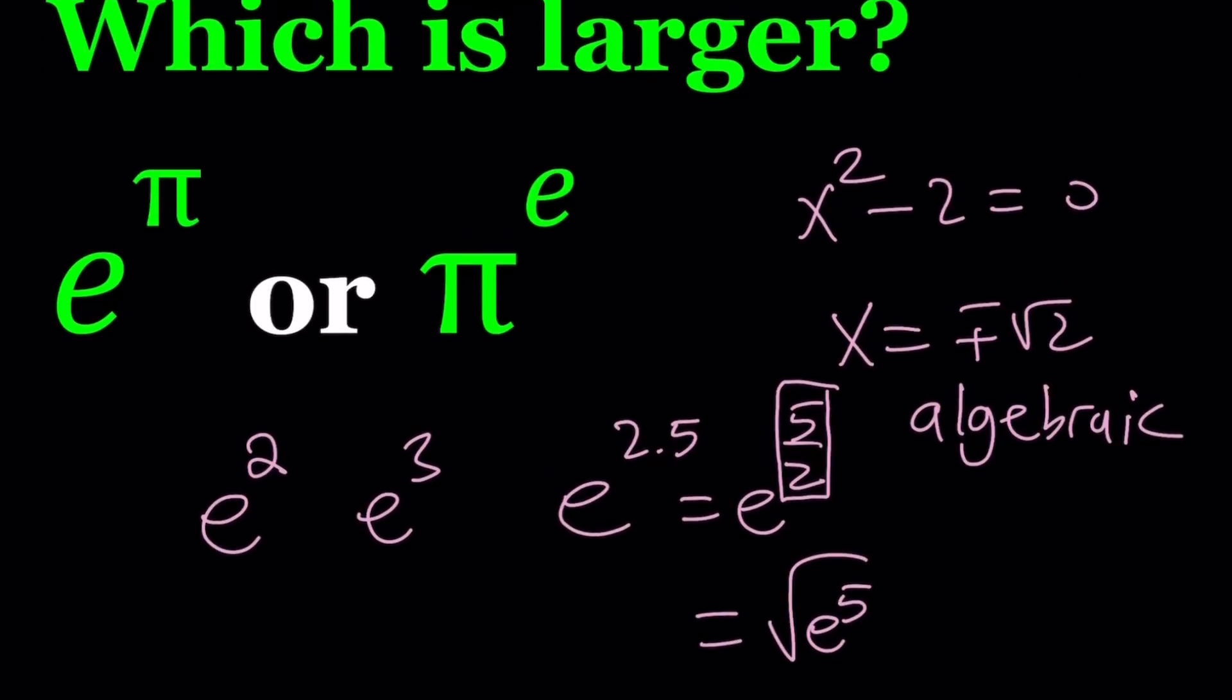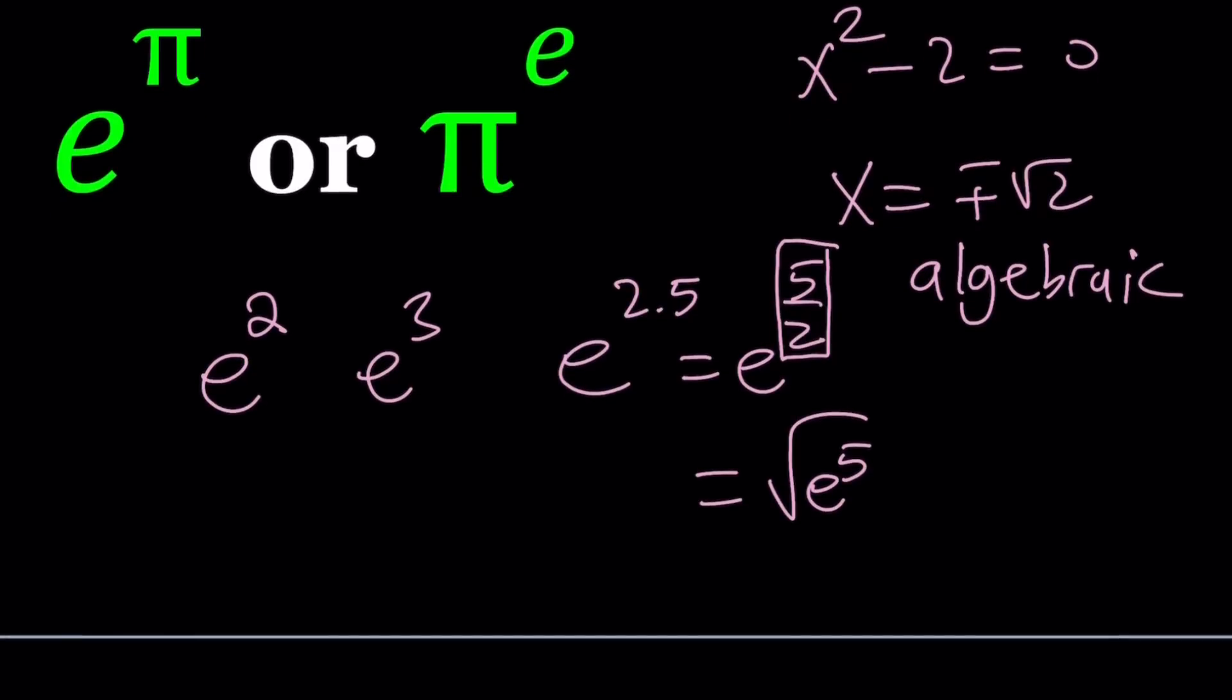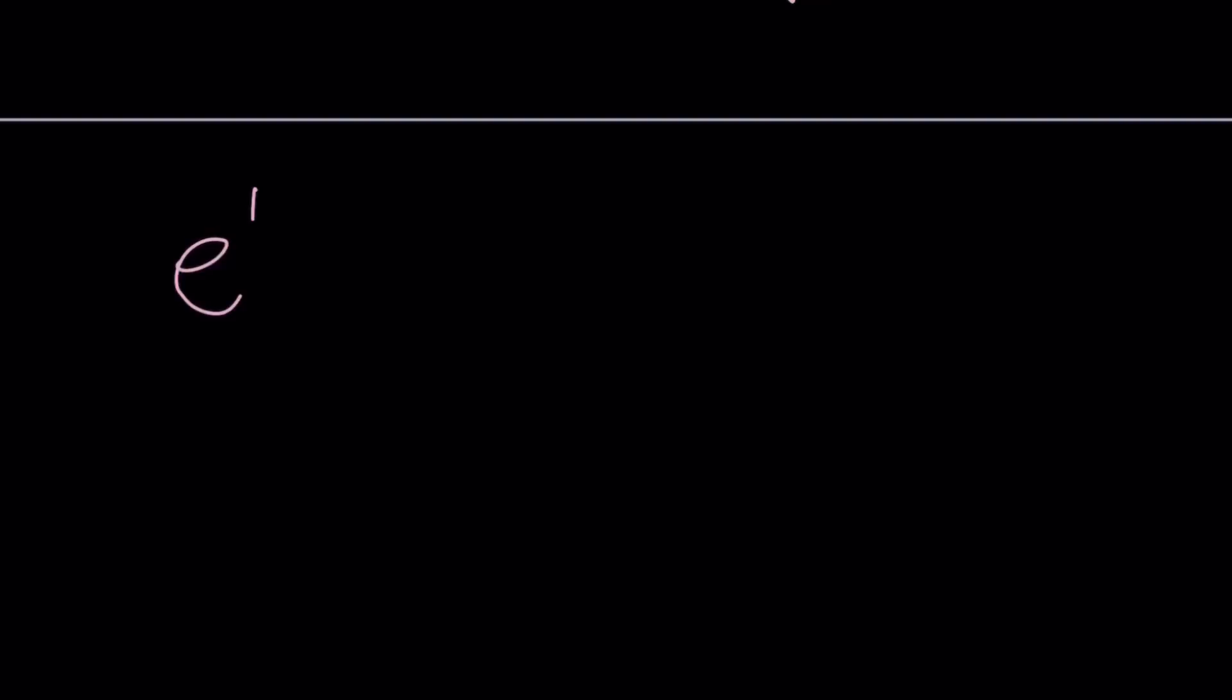Let's go ahead and see how we can compare these two numbers. I'll show you how we can compare them and then also show you a numerical value that I got from Wolfram Alpha. First of all, notice that the base and the exponent are being switched around. So that should tell you something.